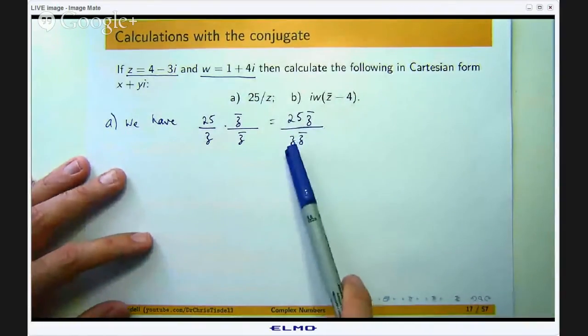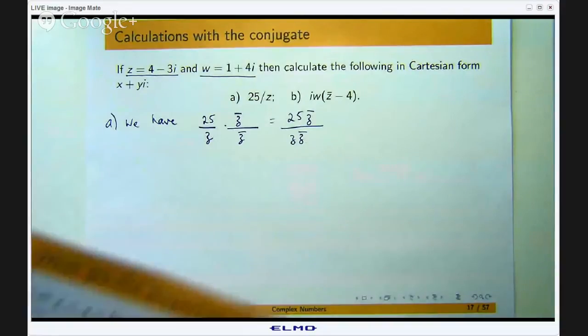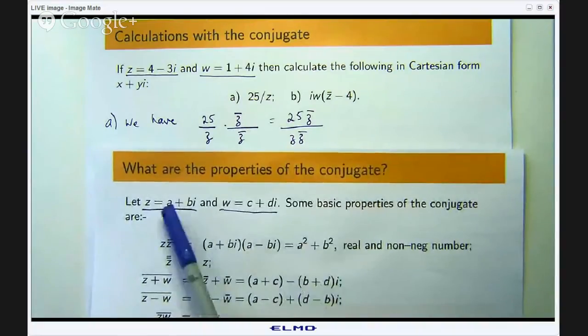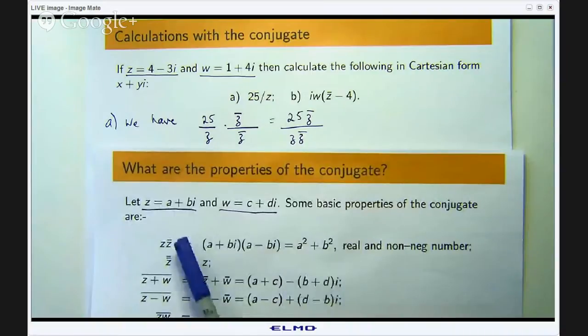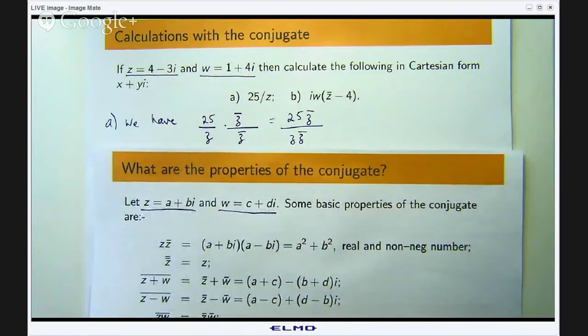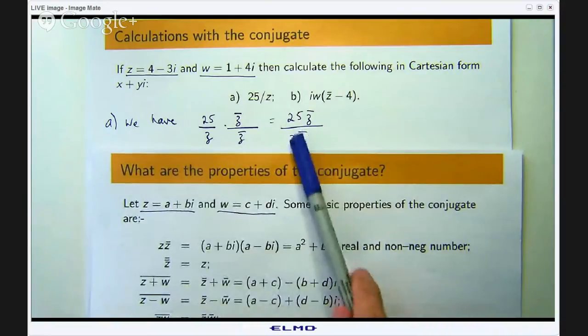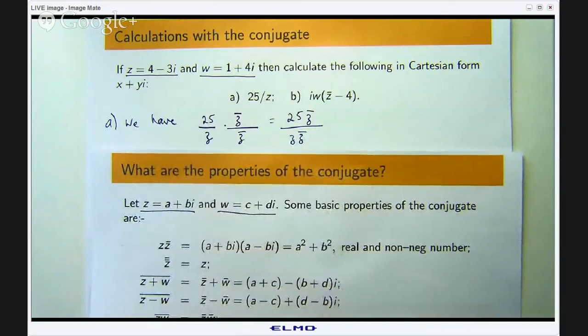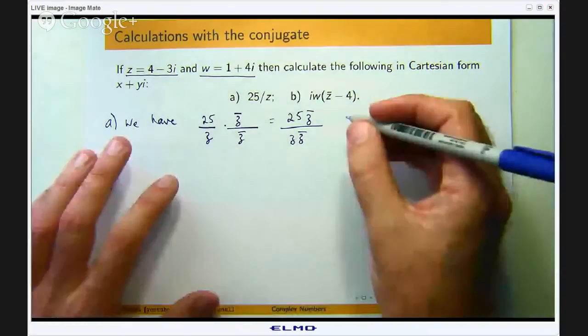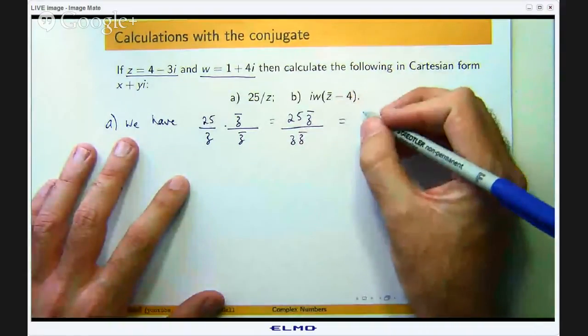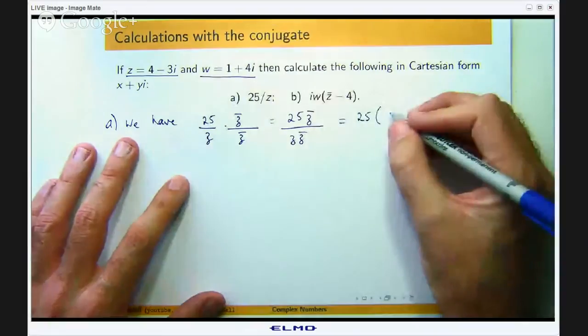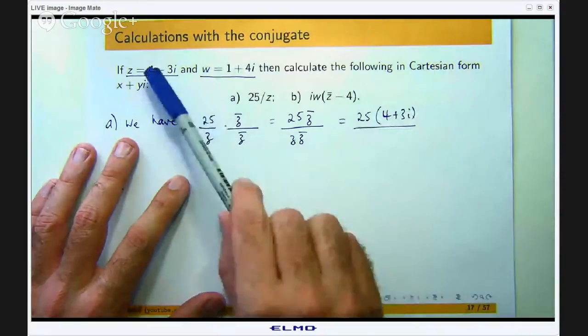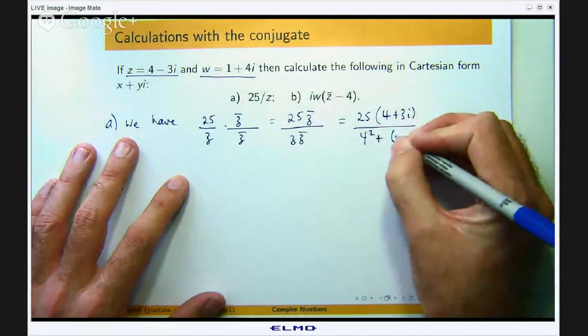I am not going to, to try to save you some time with this process. So Z times Z bar, that is in the previous video, it is basically just the sum of the square of the a and b of the complex number Z. So here I can actually write that down only knowing Z. It is 4 squared plus negative 3 all squared on the bottom here. And the top, well I will write that out. Z bar is 4 plus 3i.